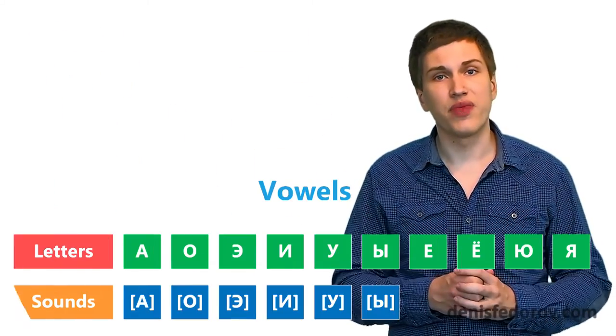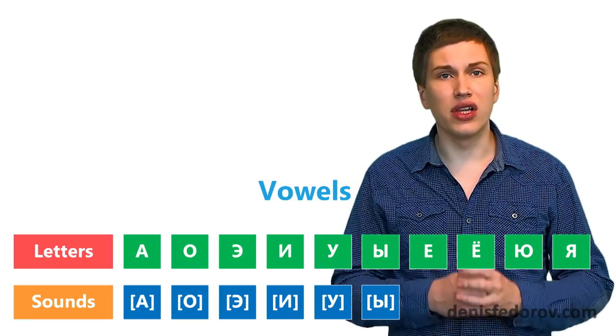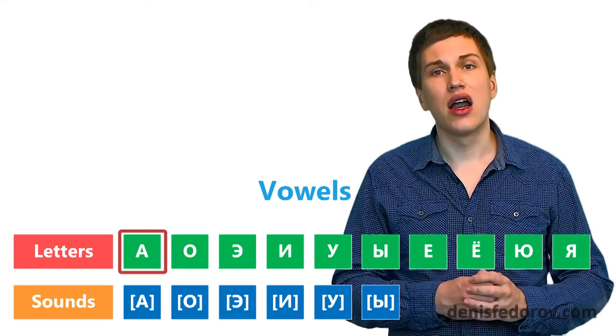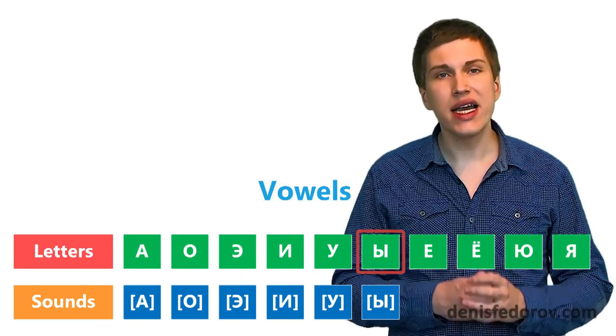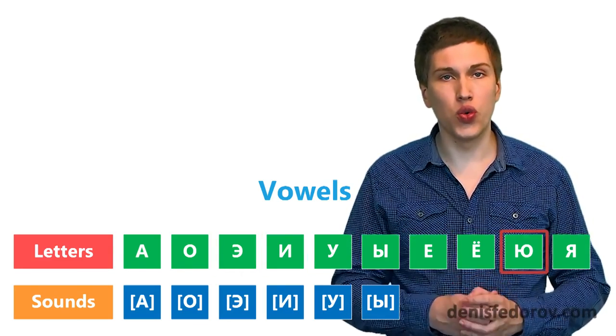First vowels. There are 10 vowel letters in Russian. The letters are А, О, Э, И, У, Ы, Е, Ё, Ю, Я.